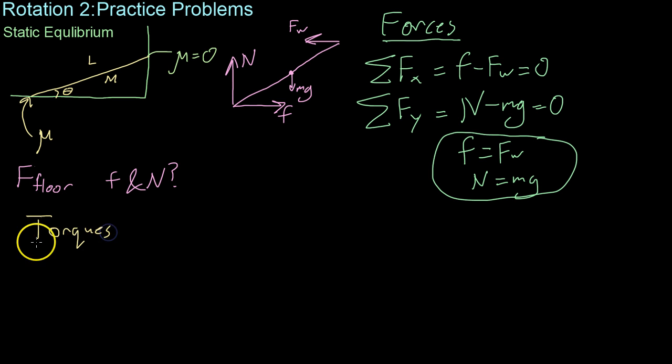So we'll start off interpreting this FBD in terms of the forces at work. So if we sum the forces in the X direction, we get the friction minus the force of the wall equals zero because this ladder isn't moving. And if we sum the forces in the Y direction, we'll just arbitrarily choose up as the positive direction. And then we get that the normal force minus the weight equals zero.